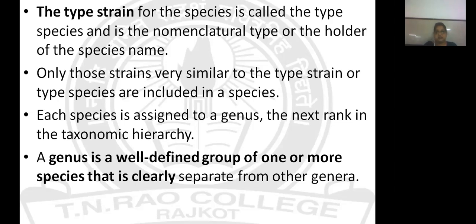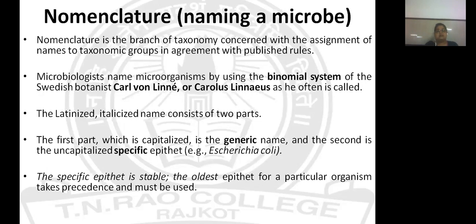Each species is assigned to a genus, which is the next rank in the taxonomic hierarchy. A genus is a well-defined group of one or more species that is clearly separate from other genera and may be quite closely related internally. Species sharing more similarity in their characters are placed together under a single genus. These two taxonomic ranks — genus and species — are very important for naming microorganisms, and the procedure is called nomenclature.